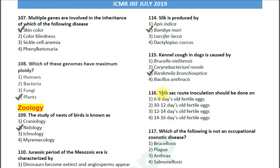Question number 116: Yolk sac route inoculation should be done on — option 1: 6 to 8 days old fertile eggs; option 2: 10 to 12 days old; option 3: 12 to 14 days; option 4: 14 to 16 days. The correct answer is option 2 — 10 to 12 days old fertile eggs.